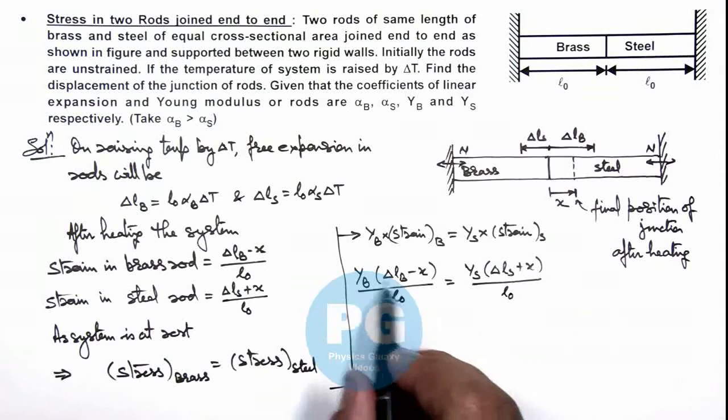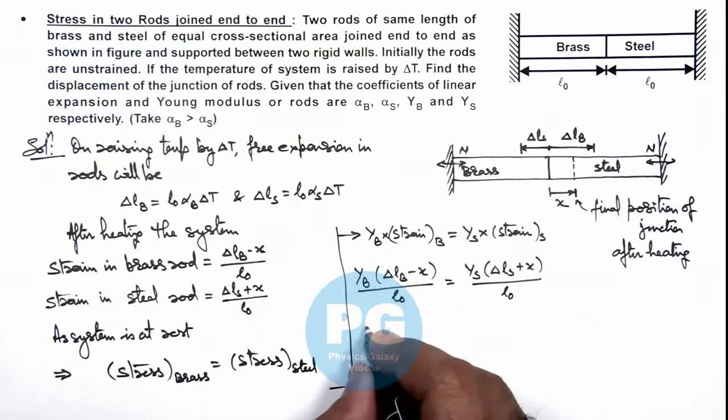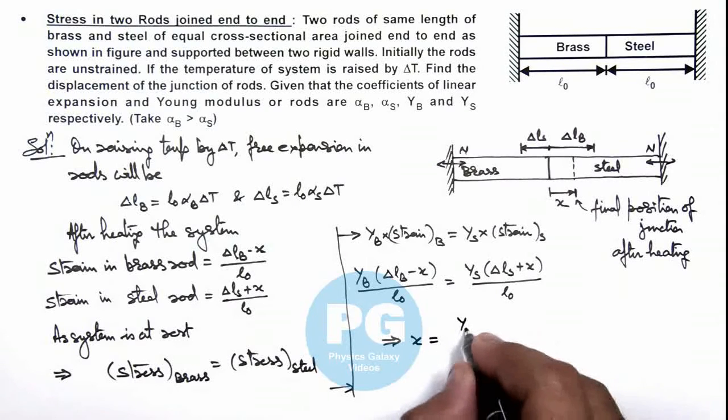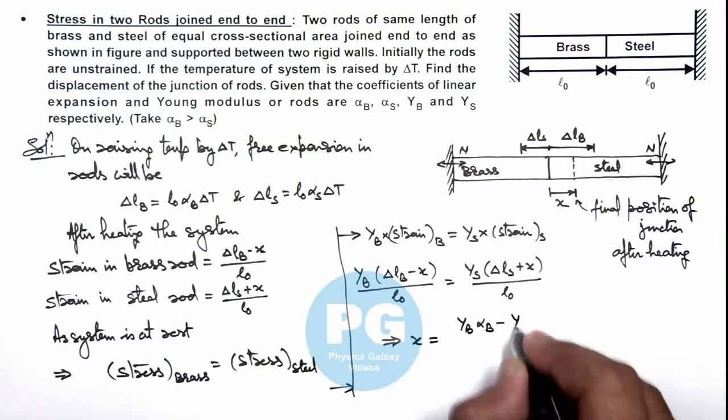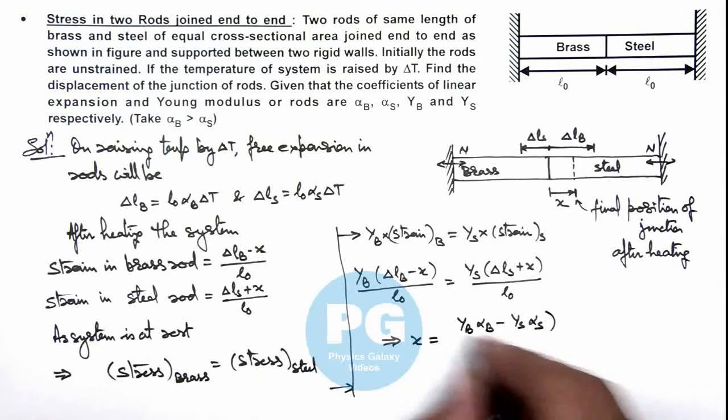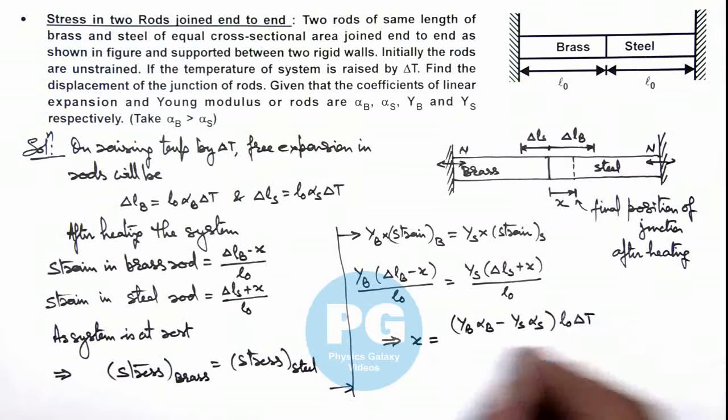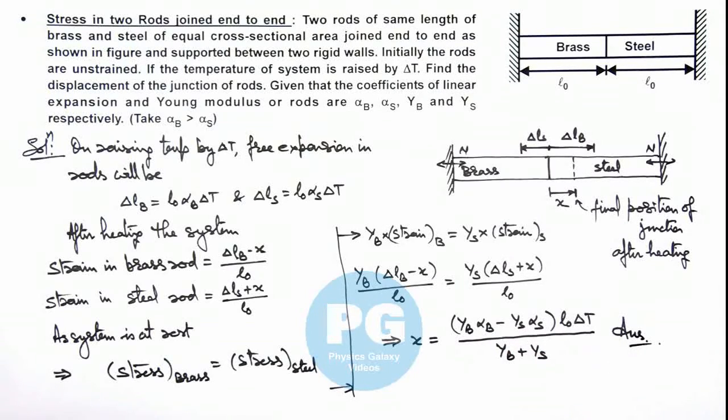Here you can substitute the value of ΔLB and ΔLS, and after simplifying here, this will give us the value of x which you can verify: that will be (YB·αB - YS·αS)·L₀·ΔT/(YB + YS). You can solve this and verify the result, which is the final result of this problem.